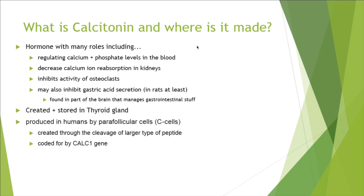So it inhibits osteoclasts and therefore decreases calcium in the blood. It also may inhibit gastric acid secretion in rats, according to this experiment. We can tell it might have a role in this because it's found in parts of the brain that manage gastrointestinal stuff.